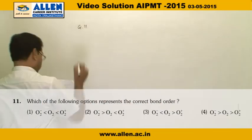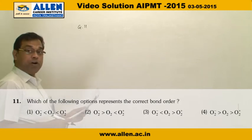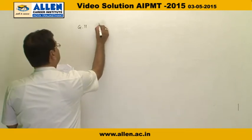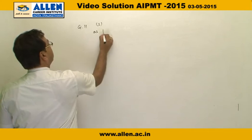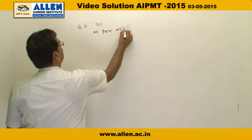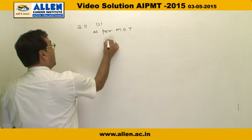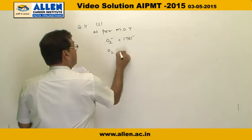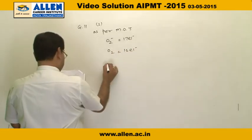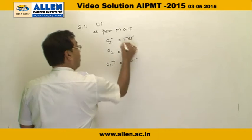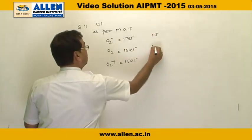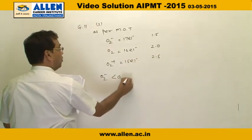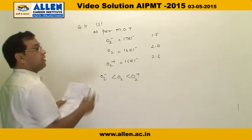Question number 11: Which of the following options represents the correct bond order? As per MOT (Molecular Orbital Theory), O₂⁻ has 17 electrons, O₂ has 16 electrons, and O₂⁺ has 15 electrons, giving bond orders of 1.5, 2, and 2.5 respectively. So the correct order is O₂⁻ < O₂ < O₂⁺, which is option number 1.